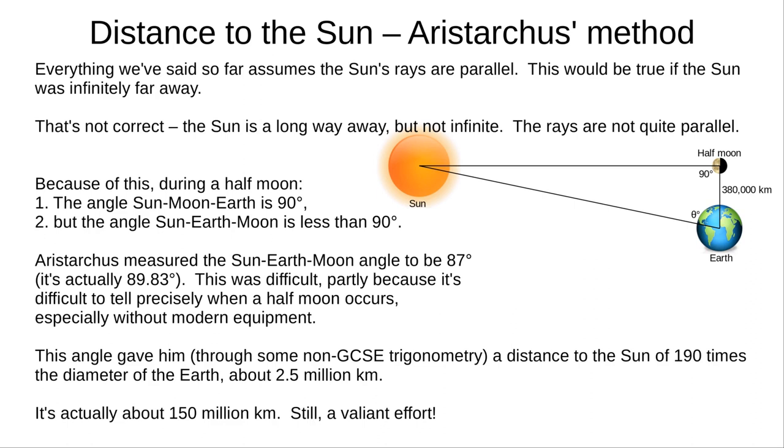Now, bear in mind that everything we've said so far assumes that the sun's rays are parallel. And this would be true if the sun was infinitely far away. It's not correct, though. The sun's a long way away, but it's not infinitely far away. And the rays are not perfectly parallel.